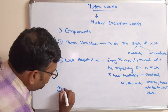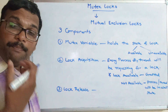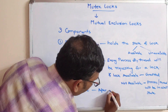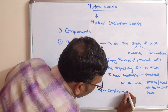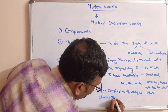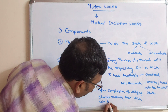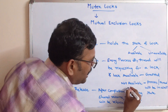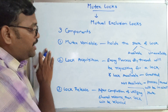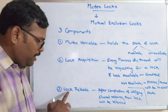The third component is lock release. Whenever the process has completed utilizing the shared resource, then the lock will be released. Until it completes utilizing the shared resource, the lock will not be released. So these are the three major components of mutex locks: mutex variable, which holds the state; lock acquisition, the requesting of lock; and lock release.